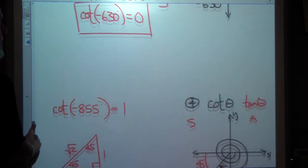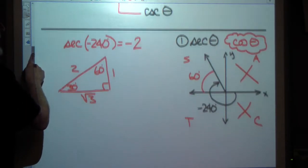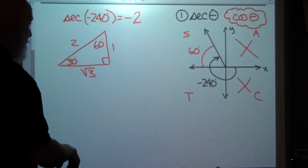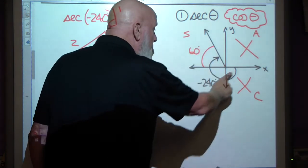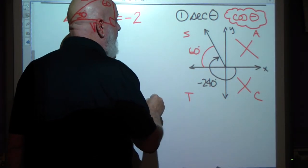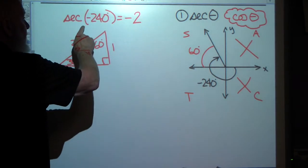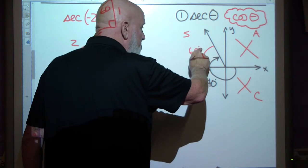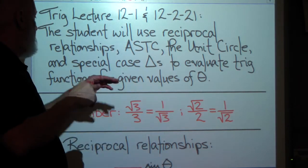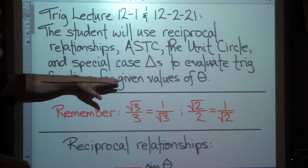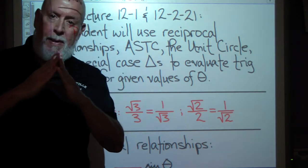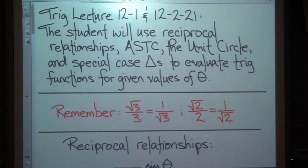We're going to use the tools we've used in the past — reciprocal relationships, ASTC, special case triangles, and the unit circle — just applied a bit differently to evaluate trig functions for given values of theta. For the secant of negative 240 degrees, since we're in quadrant 2, the secant is negative because cosine is negative there. You can do this. Just ask me to help you in class and I'll be happy to. Thank you.